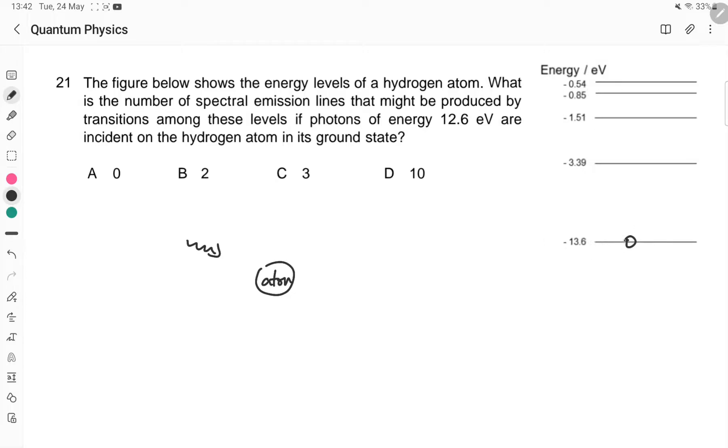So we've got to ask ourselves, what energy can this atom accept? Well, if it goes from level 1 to 2, that will be around 10.2 eV. Or if you go from level 1 to 3, that will be 12.1 eV.